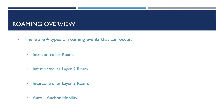There are four types of roaming events that can occur within our wireless network, depending on the design of our wireless infrastructure. These roaming events are Intra-Controller Roaming, Inter-Controller Roaming Layer 2, Inter-Controller Roaming Layer 3, and Anchor Mobility.